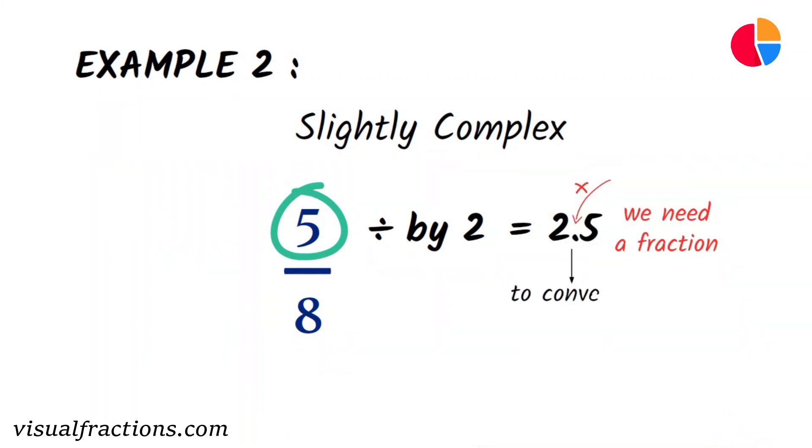To convert 2.5 to a fraction, we write it as an improper fraction by multiplying both the numerator and denominator by 2. This gives us 5 halves.